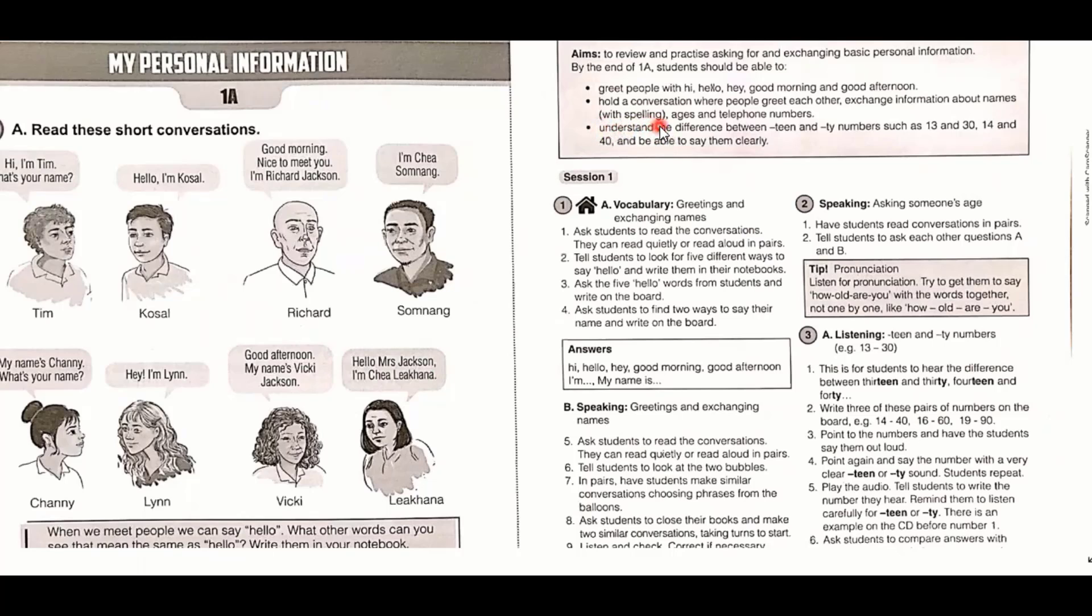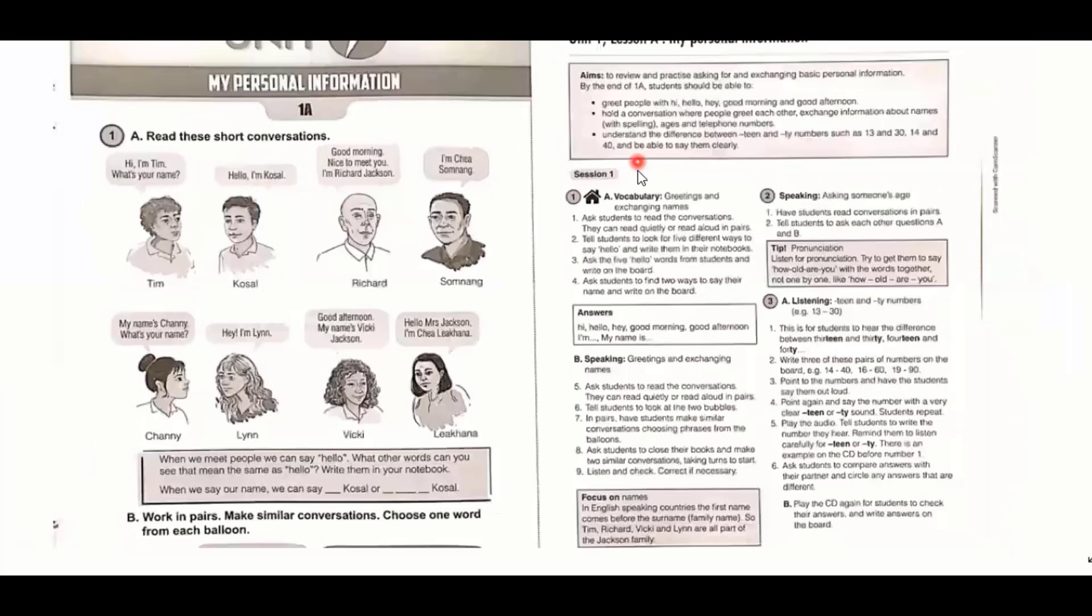For example, the verb 'understand' here - if you have experience taking courses in teaching methodology or objective writing, you may know the kinds of words we should use for writing objectives. The word 'understand' is a kind of non-action verb, so I don't encourage you to use this kind of word in the objectives or aims of the lesson. Better use another word. Maybe you can explore, or the best one should be 'distinguish' - distinguish the difference between teen and ty numbers such as 13 and 30 or 14 and 40, and be able to say them clearly. Better use other action words.